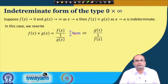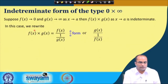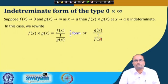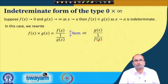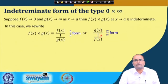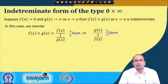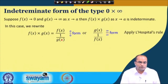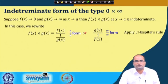Alternatively, we can keep g(x) in the numerator and rewrite f(x) as 1/f(x) in the denominator. Since g(x) goes to infinity and 1/f(x) also goes to infinity, we get an infinity/infinity form. In either case, we can apply L'Hôpital's rule, as we learned in the last lecture.